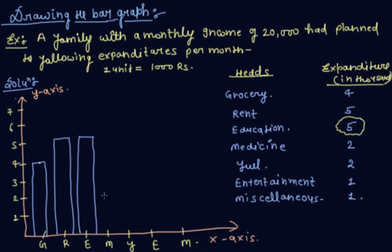Medicine is 2,000. Fuel is also 2,000. Entertainment is 1,000, and miscellaneous is also 1,000.